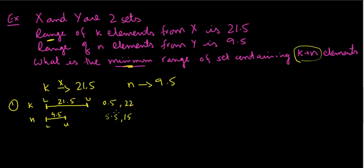Let's do the similar process for N elements, whose range is 9.5. How about I pick 5.5 to be the lower bound and 15 to be the upper bound. Again, the difference of these two is the range given in the problem for N elements, 9.5. So you see that the N elements with their range will fall within these two numbers from the K elements, 0.5 to 22. So in this case, if I combine these two, what would my range be? Well, your smallest number is still 0.5, your biggest number is still 22, so the range would be 21.5.